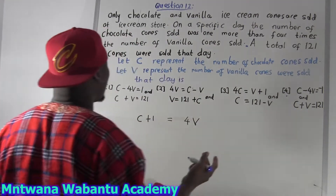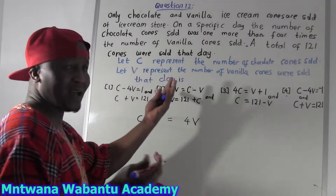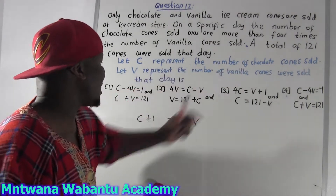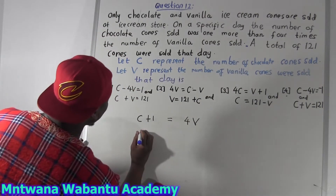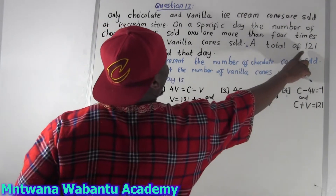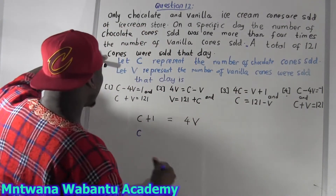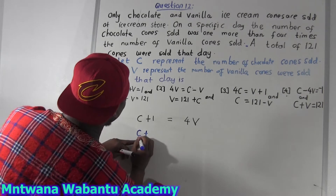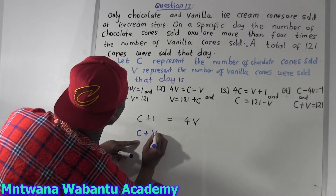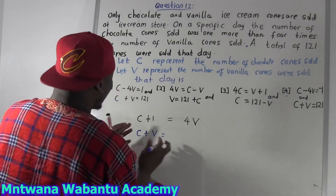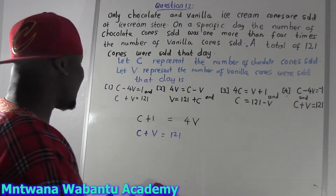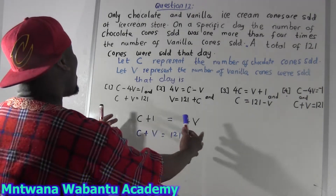Now there's another equation — the total number is 121 cones. That means vanilla plus chocolate equals 121. So if we take both the chocolate and vanilla cones sold, their total is 121: C + V = 121.